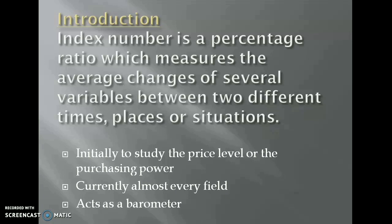When index numbers of prices, outputs or bank deposits, reserves are prepared individually, they put a light on the variations in the price level of business activities. So when individually they are prepared, they are called as simple index number. Now all the simple index numbers, when combined together, we call it as composite index. This composite index could act as an economic barometer.